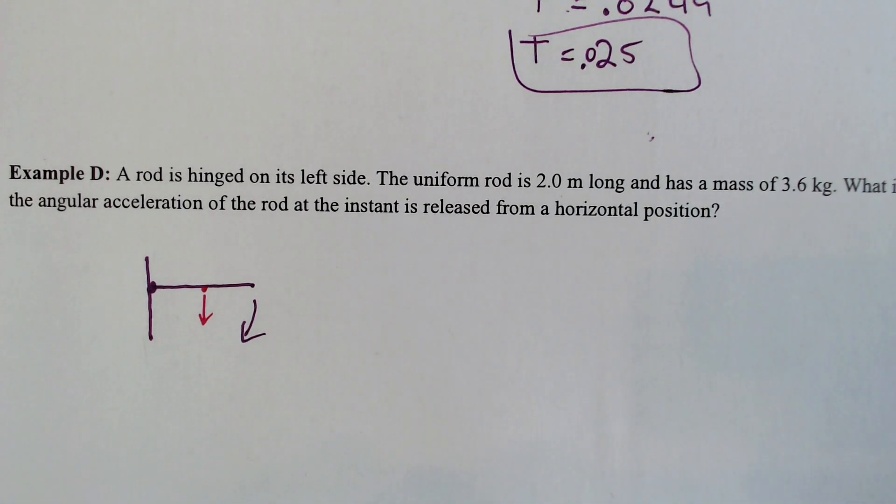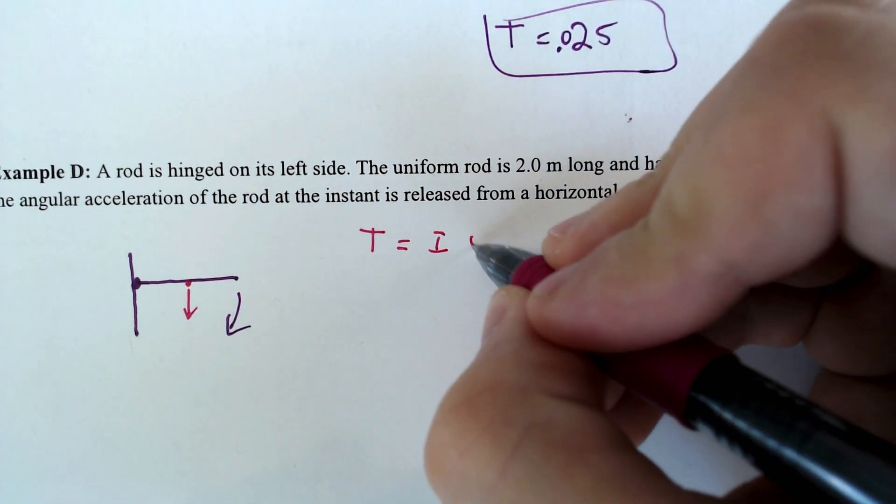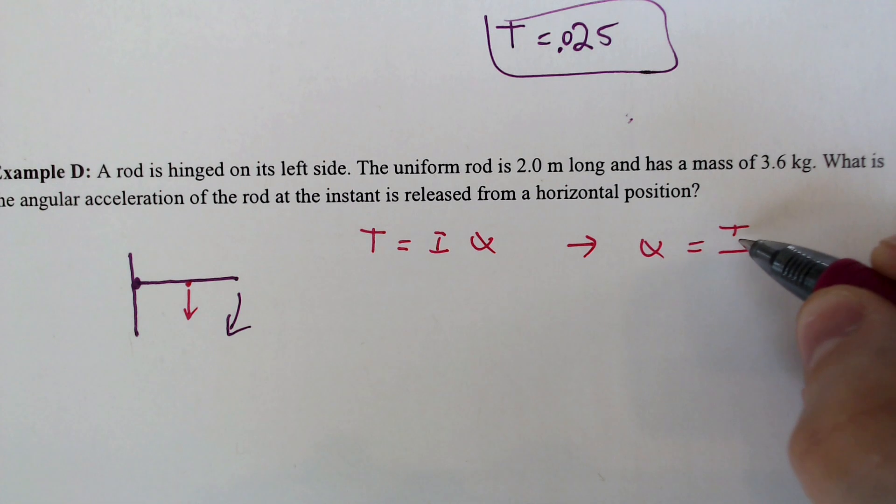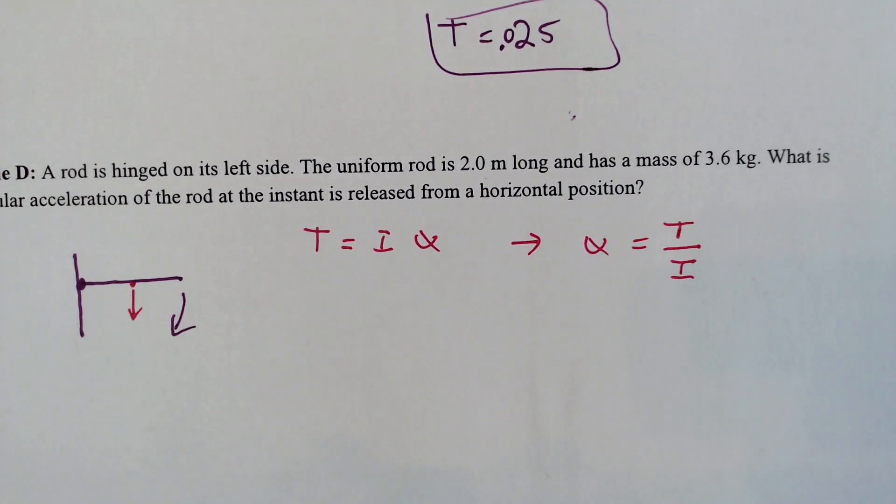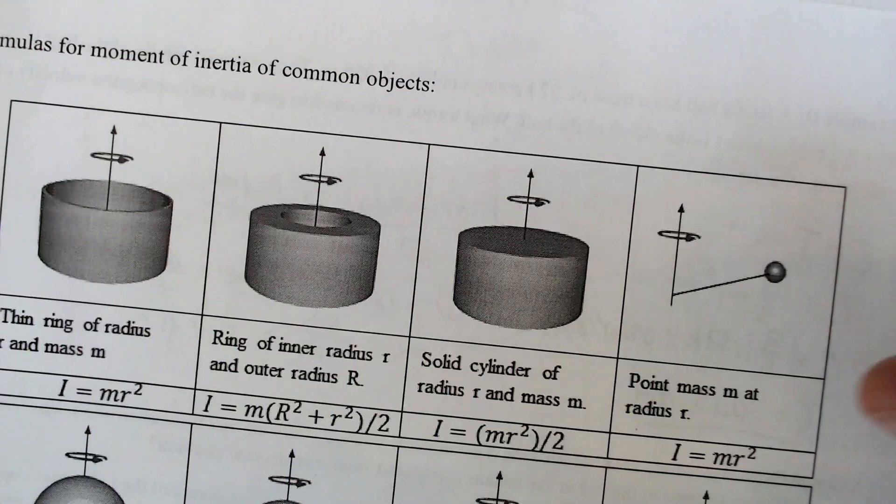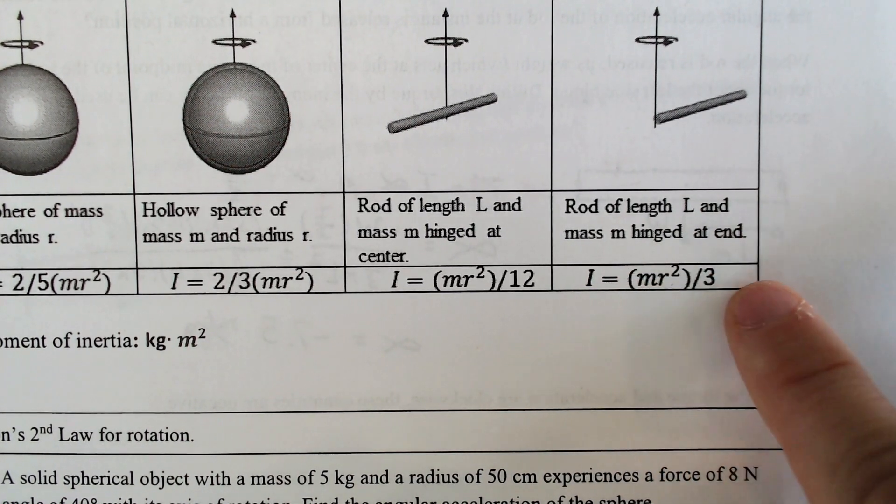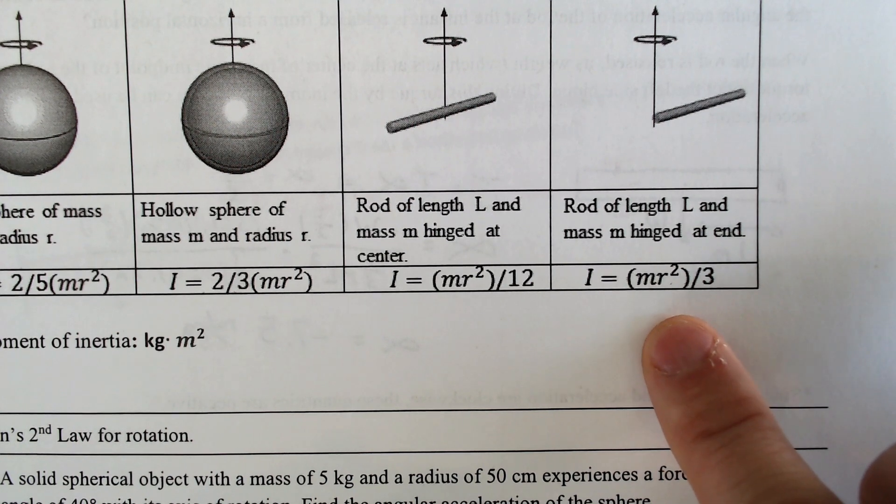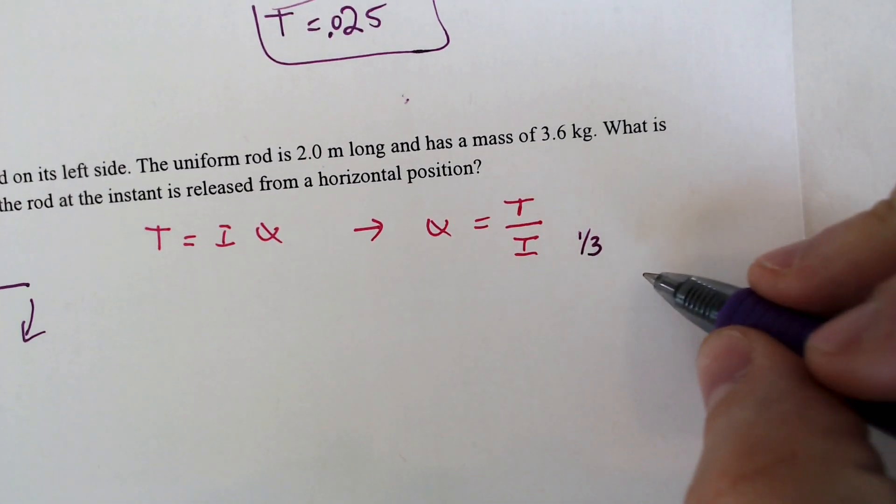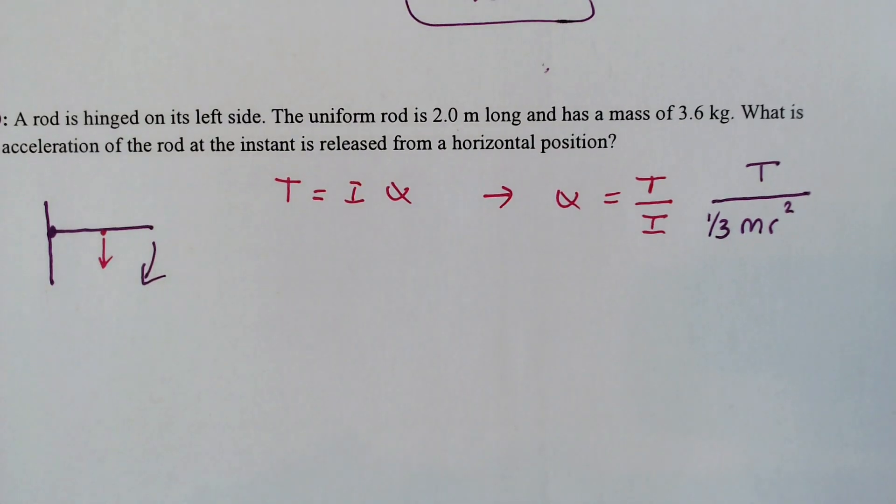With that in mind, we need to figure out the angular acceleration. So we're going to start with torque is equal to the inertia times the angular acceleration, which means that the angular acceleration would equal torque divided by that inertia, T over I. What else do we know? Well, we know that it has 2 meters long and has a mass of 3.6. We also know from this page over here they didn't provide it to us, but it is going to be a rod length L with a mass M hinged at the end. So the I is going to equal mass times radius squared divided by 3. Or you could think of it as 1/3 its mass times radius squared. Torque on top.